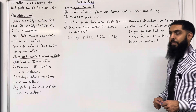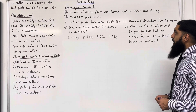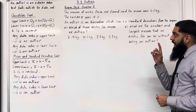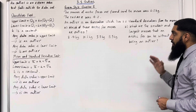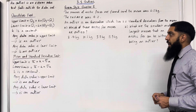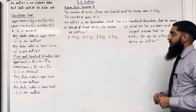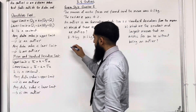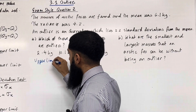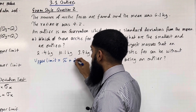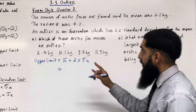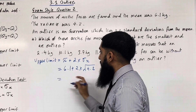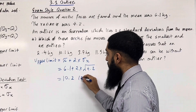Moving on to exam style question 2. The masses of arctic foxes are found and the mean was 6.1 kg. The variance was 4.2, hence the standard deviation is the square root of the variance — square root of 4.2. An outlier is an observation which lies plus or minus 2 standard deviations from the mean. Part A: which of these arctic fox masses are outliers: 2.4 kg, 10.1 kg, 3.7 kg, and 11.5 kg? The first step is to define the upper limit: x-bar plus 2 lots of sigma x, giving 6.1 plus 2 times the square root of 4.2, which equals 10.2 to 3 significant figures.